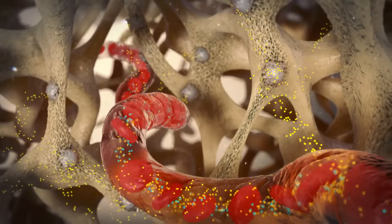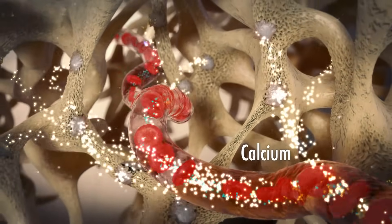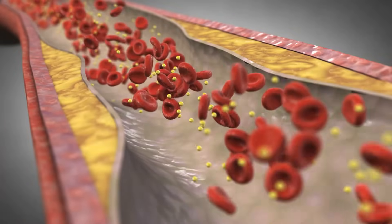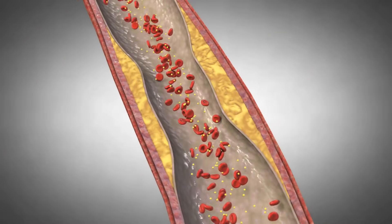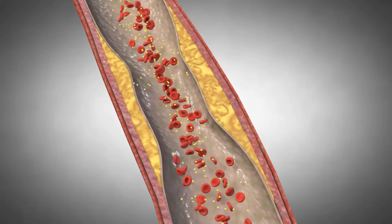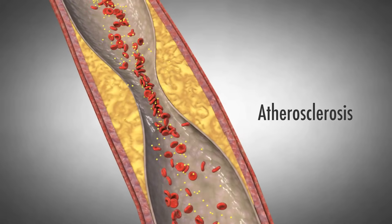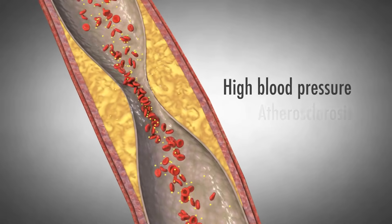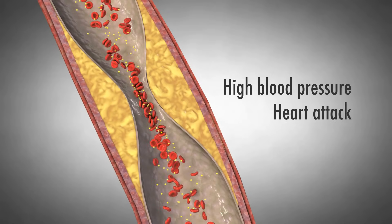The destruction of bone releases calcium into the blood. High blood calcium levels are seen in almost all patients with a parathyroid tumor. The excess calcium can build up in the arteries, increasing atherosclerosis throughout the body. This can lead to high blood pressure and increase risks for heart attack and stroke.